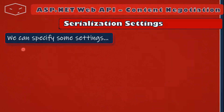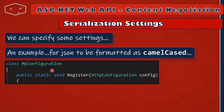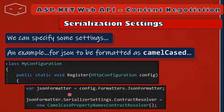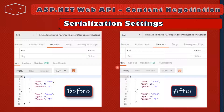Serialization settings. Sometimes we can specify how Web API will serialize the result. An example is formatting JSON as camelCase. To do that, go to MyConfiguration under the configuration folder of the Hello World project. In the Register method, access config.Formatters.JsonFormatter.SerializerSettings.ContractResolver and assign a new CamelCasePropertyNamesContractResolver. Before this setting, JSON properties like Name, Age, and Gender start with uppercase. After applying it, they start with lowercase — that is how camelCase works.